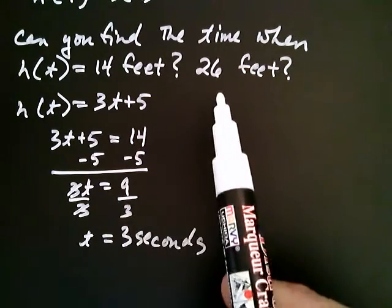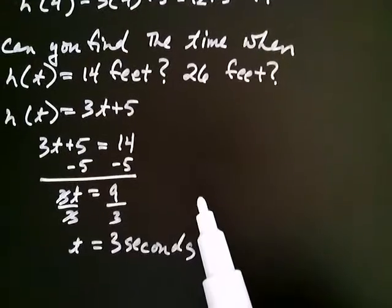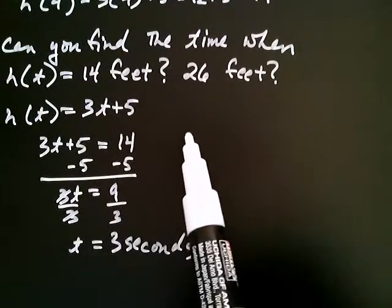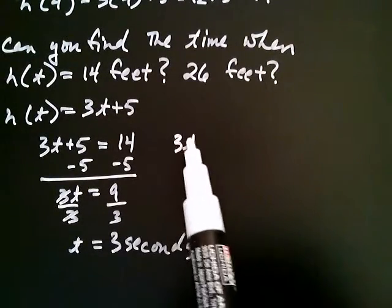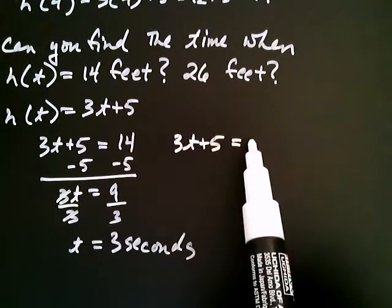Let's try that again for 26 feet. Can I find the time when the height is 26 feet? Well, that would be saying, when is 3t plus 5, that is, that's how I always get my height, when's that equal to 26?